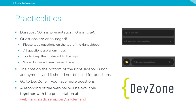Just some quick practicalities. The duration will be roughly 50 minutes with a 10-minute Q&A. Questions are encouraged — please type them in the top of the right sidebar. All questions are anonymous. Try to keep them relevant and we will answer towards the end. The chat on the bottom right side is not anonymous and should not be used for questions. If you have more questions after the webinar, feel free to go to devzone.nordicsemi.com. A recording of the webinar will be available together with a presentation at webinars.nordicsemi.com/on-demand.